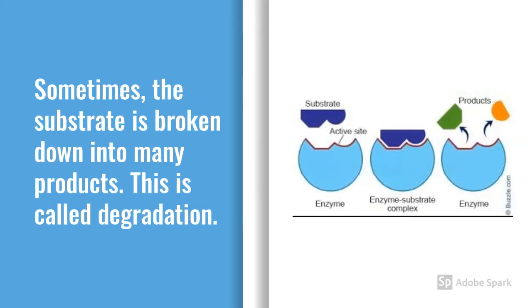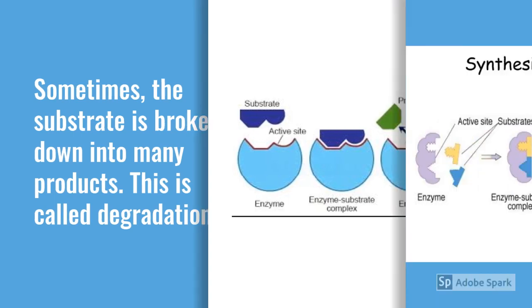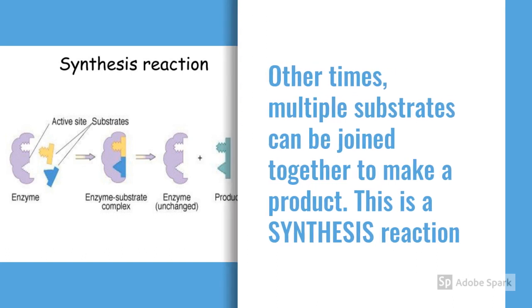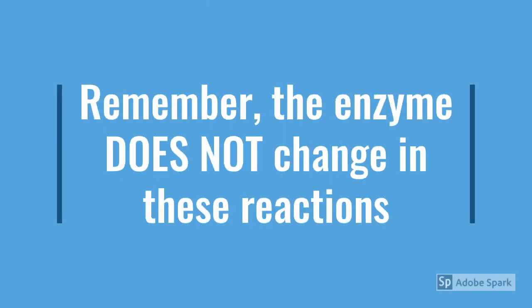Sometimes the substrate is broken down into many products — like hydrogen peroxide into oxygen and water. This is called degradation. A way to remember this is that degradation sounds like 'degrade,' and if you degrade something you are breaking it down. Other times, multiple substrates can be joined together to make a product, like a jigsaw puzzle — this is called a synthesis reaction. Remember, there is no change to the enzymes in these reactions.